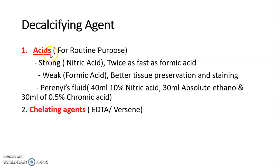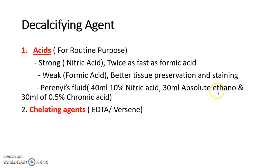Decalcifying agents are acids or chelating agents. Acids are used for routine purposes — either strong or weak acids. The strong acid used is nitric acid, which acts twice as fast as formic acid. However, formic acid gives better tissue preservation and better staining. Pernese fluid is another decalcifying agent, a combination of 10% nitric acid, absolute ethanol, and chromic acid. Chelating agents such as EDTA can also be used.